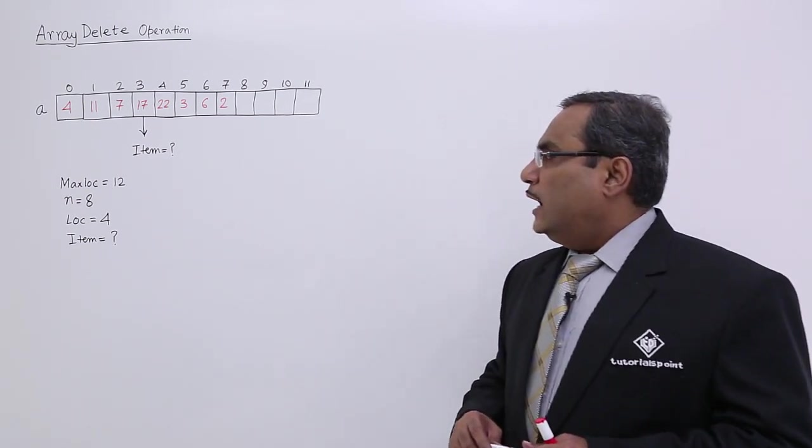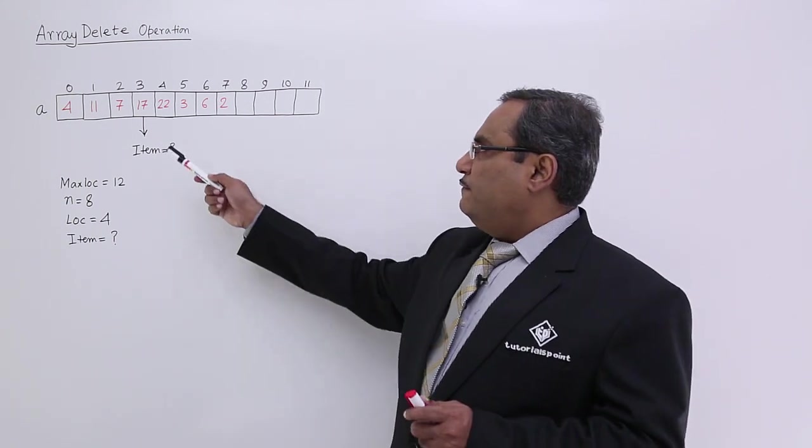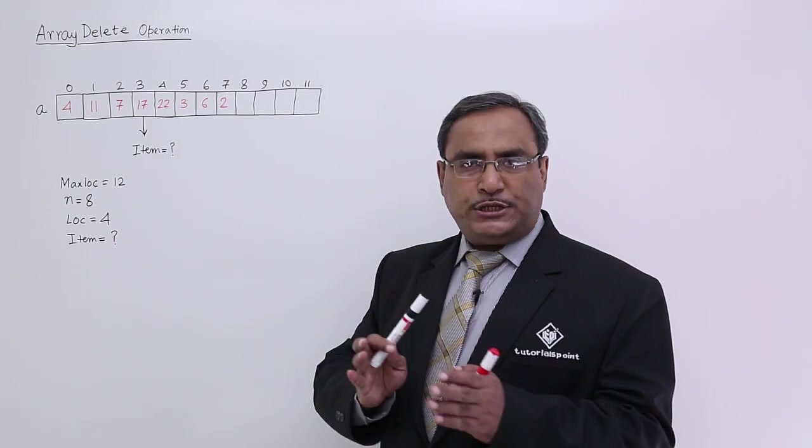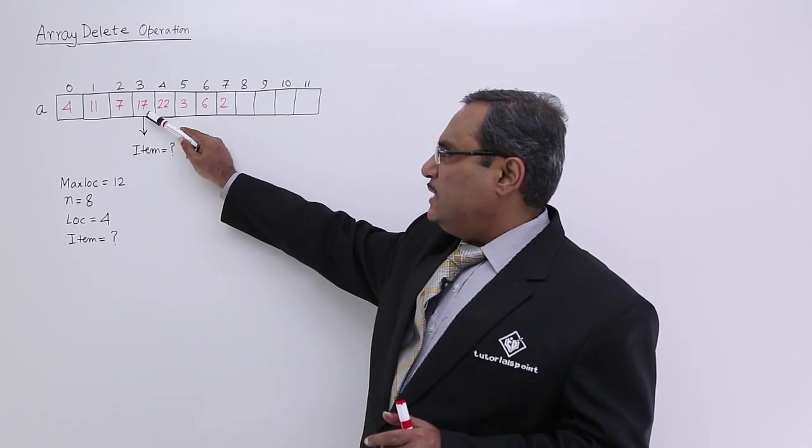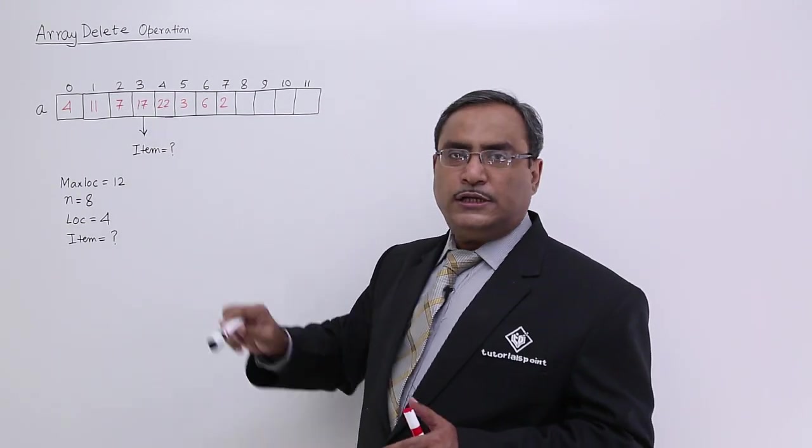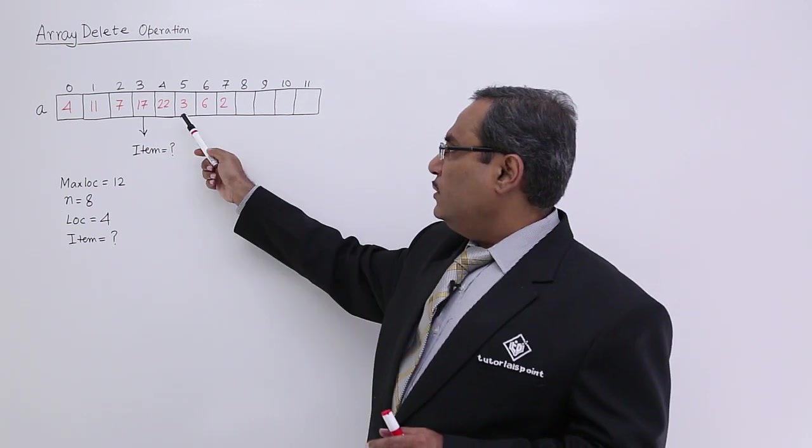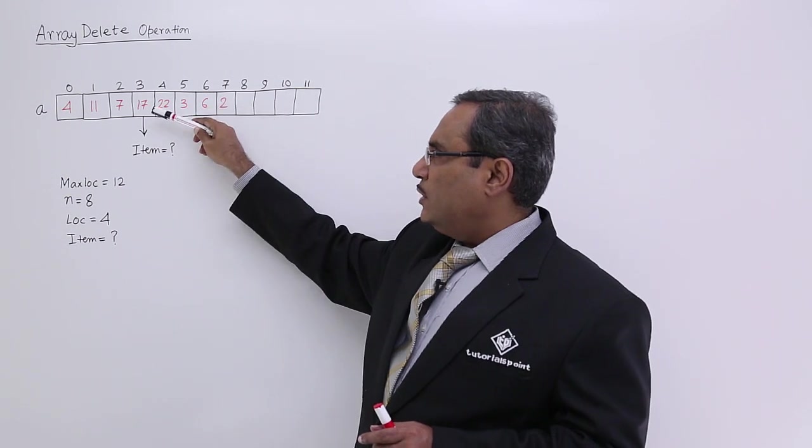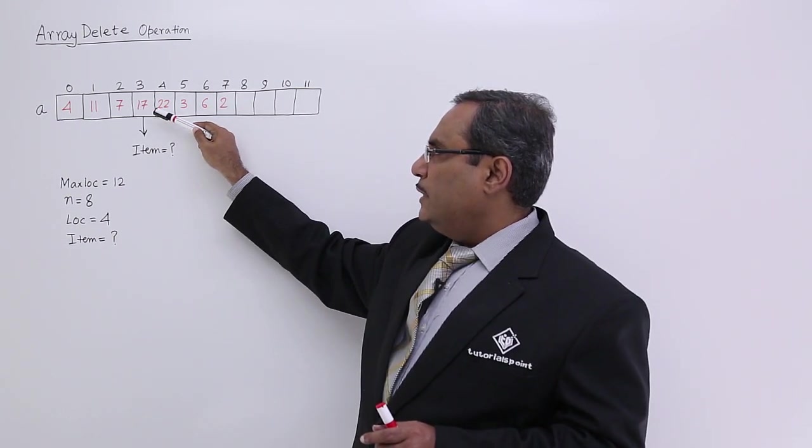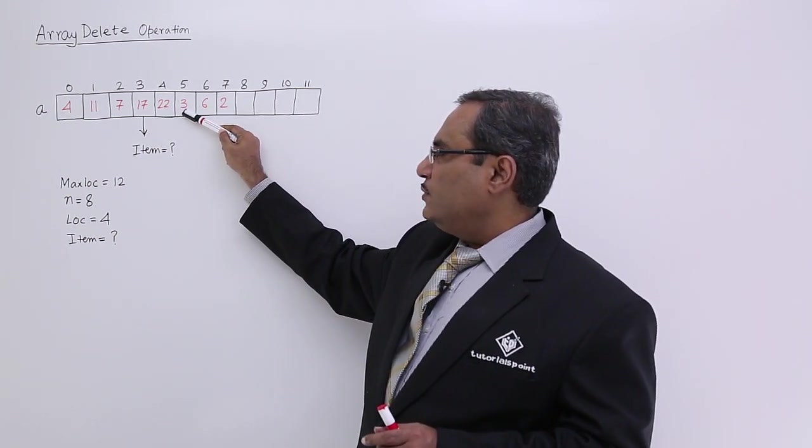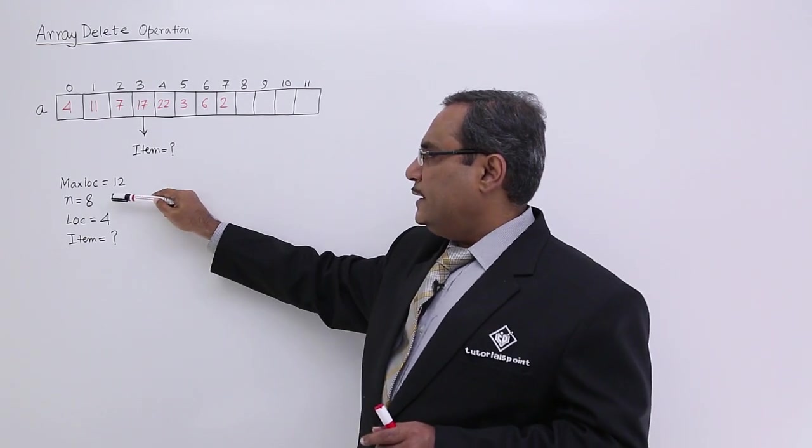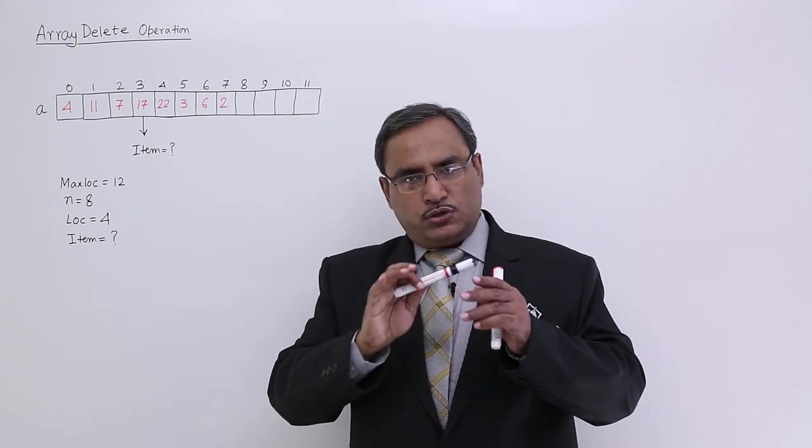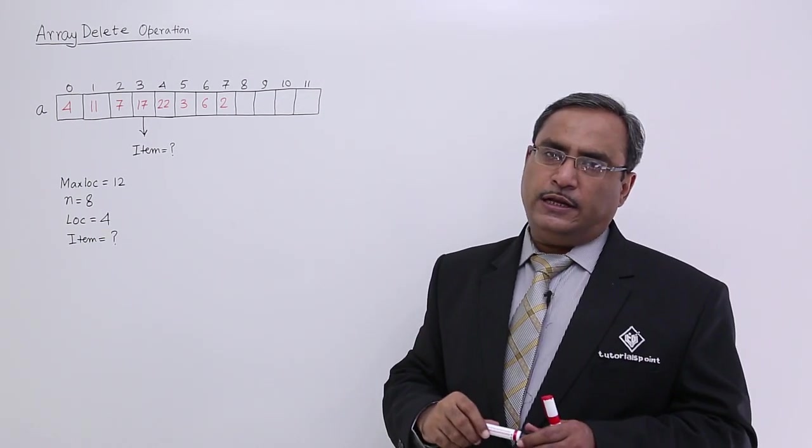Now, after performing the deletion operation, that means fetching this particular data onto item, I must do the compaction. Because there is a blank space in between 7 and 22, so compaction should take place. So this particular data, that is 22, 3, 6, 2 should get shifted towards the left. So here 22 will come, here 3 will come, here 6 will come, here 2 will come and here the value of n will be decreased by 1, so it will become 7. So that is the main operation in case of array deletion.